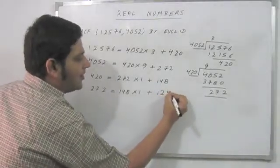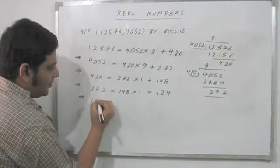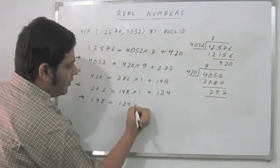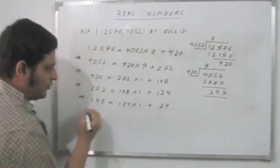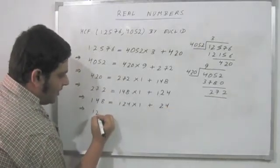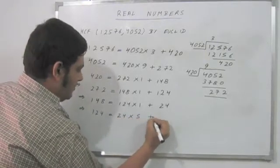Let's do this again, 148 is 124 into 1 plus 24. Let's do this again, 124 is 24 into 5 plus 4.